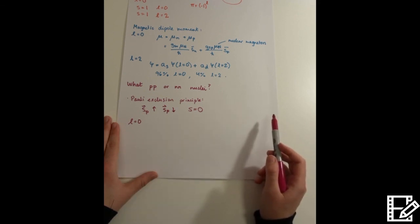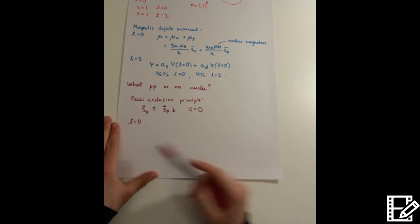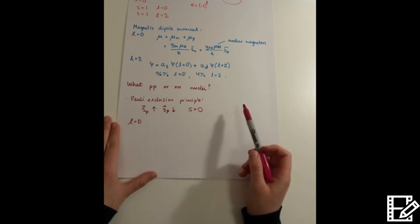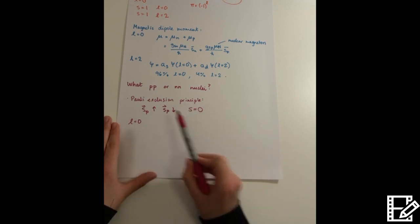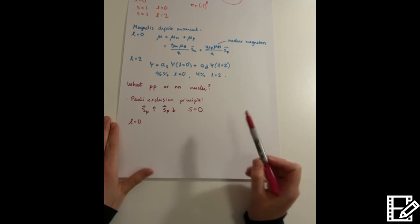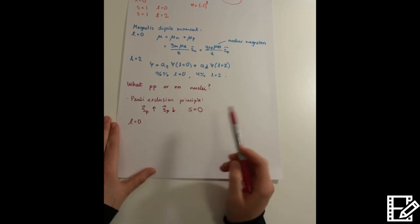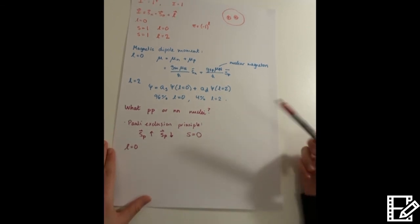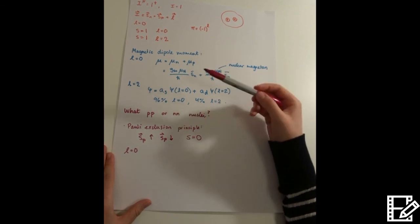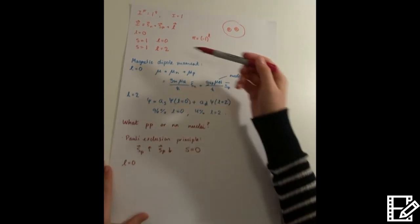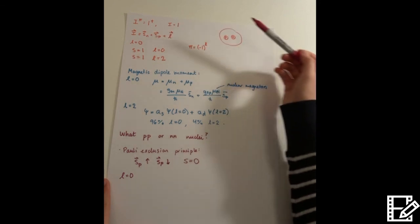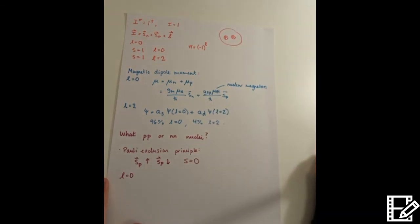And the same goes for a neutron-neutron system. So these nuclei simply can't form because this state would be unbound. Whereas luckily for the deuteron, it happens to be so that the S equals 1 states are allowed to form, and we get this bound state.